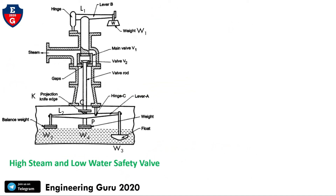This is the schematic diagram of the high steam and low water safety valve. We can see lever L1, hinge, steam out, knife edge projection, balance weight, lever L2, weight W4, float W3, hinge, valve roll, valve seat V2, main valve V1, and weight W1.